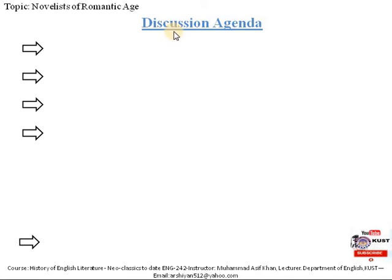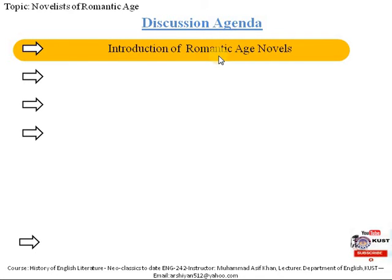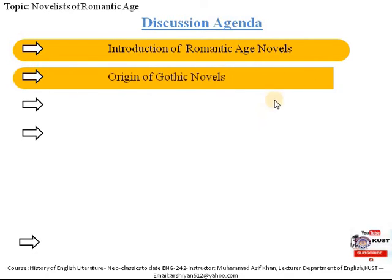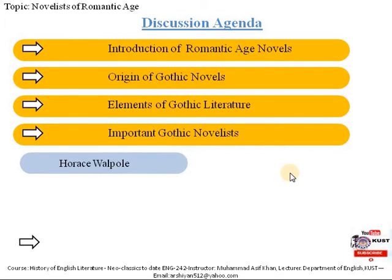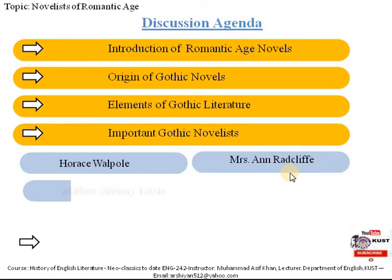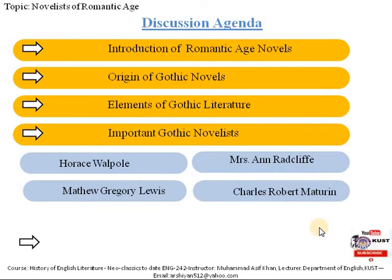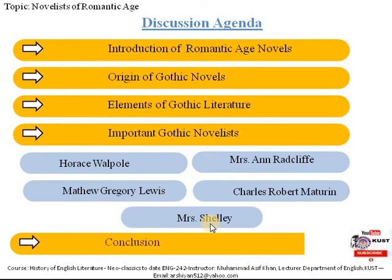This is lecture number 15. The agenda for this lesson is that first I will introduce you to the Romantic Age novels and the novelists famous in that time period. Then I will move toward the origin of the Gothic novel, followed by a discussion on the elements of Gothic literature. Subsequently, we will look at important Gothic novelists including Horace Walpole, Ann Radcliffe, Matthew Gregory Lewis, Charles Robert Maturin, and Mrs. Shelley, followed by a conclusion.